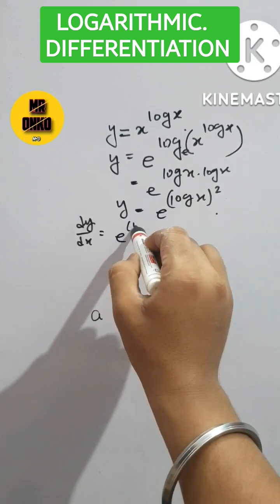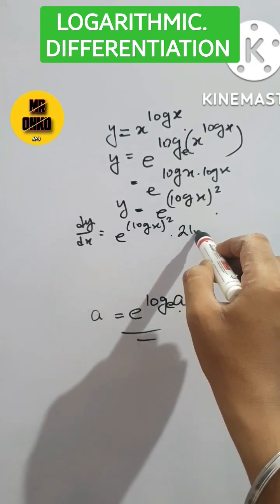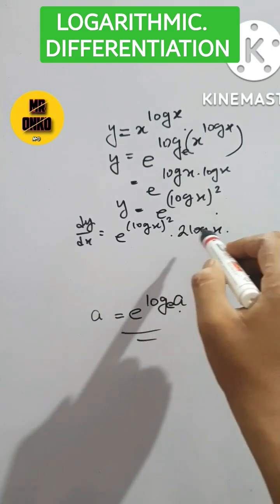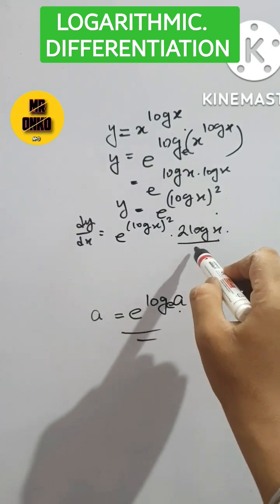First of all it will be e to the power log x whole square 2 into log x, and log x will be further differentiated to be 1 by x.